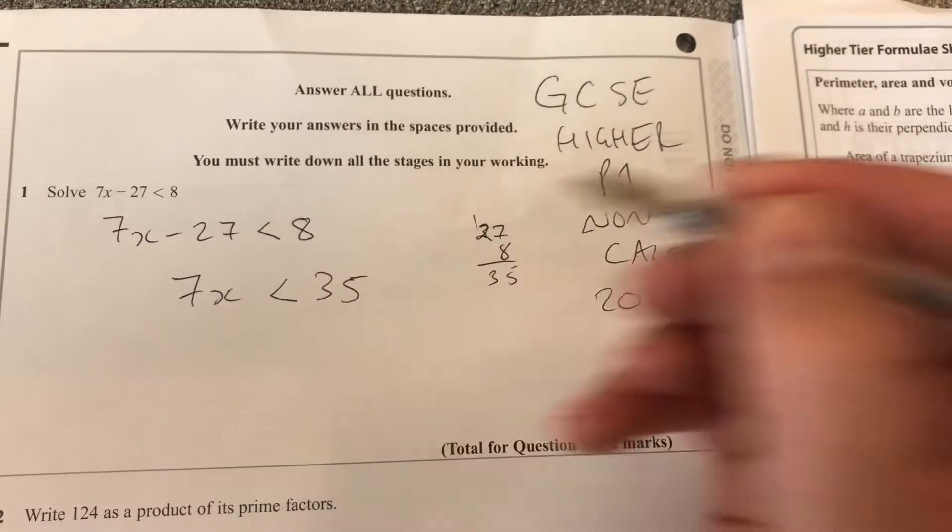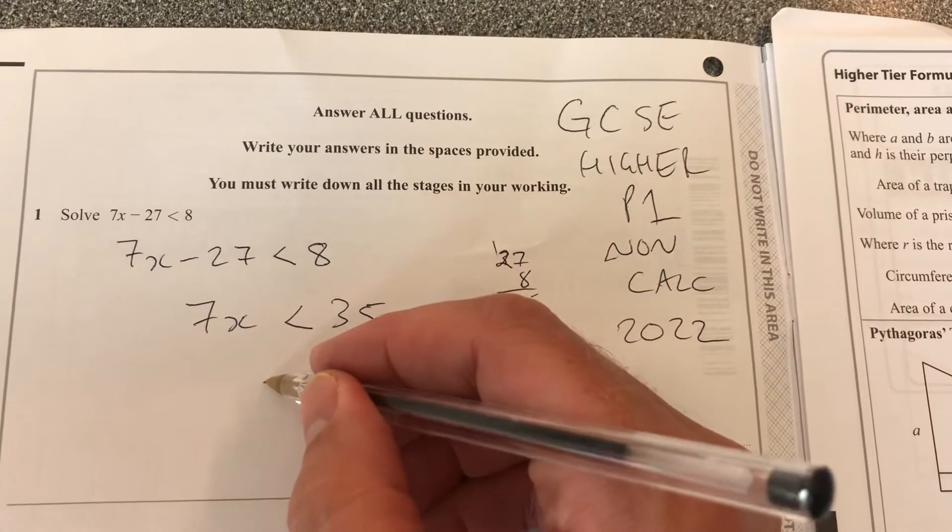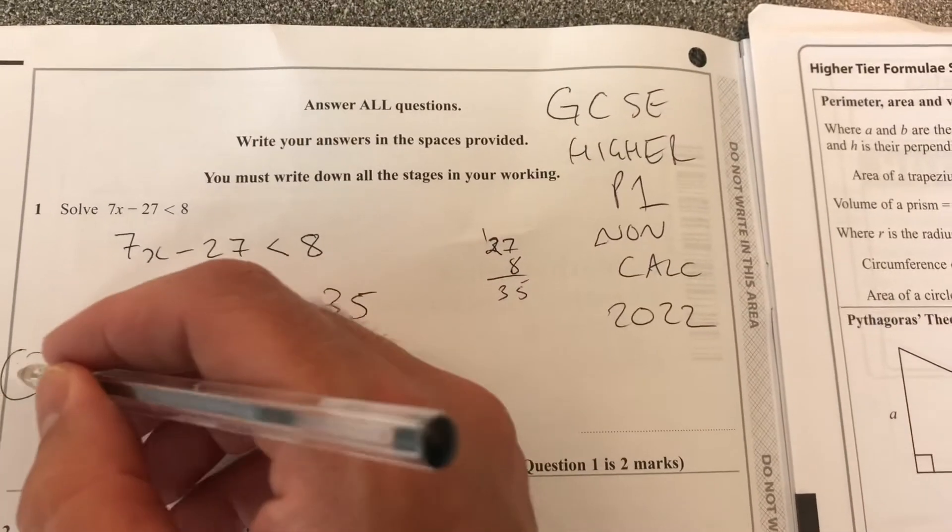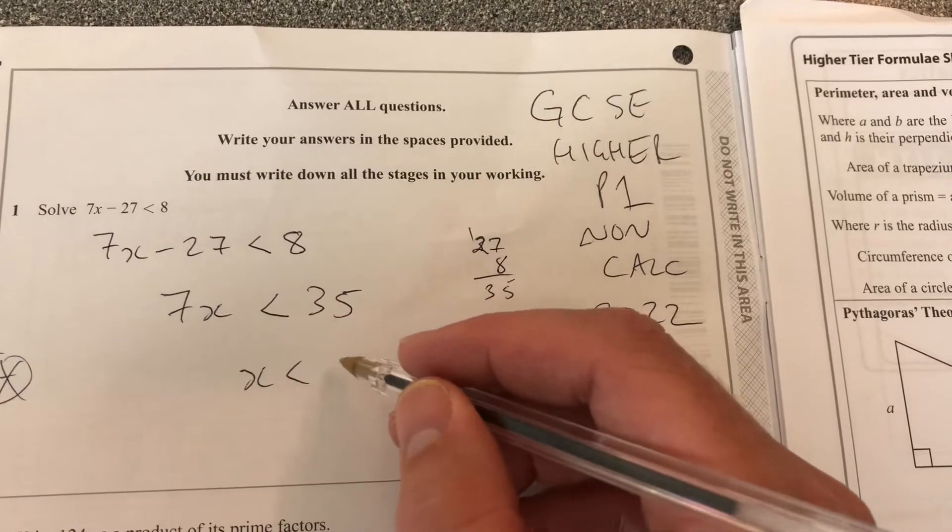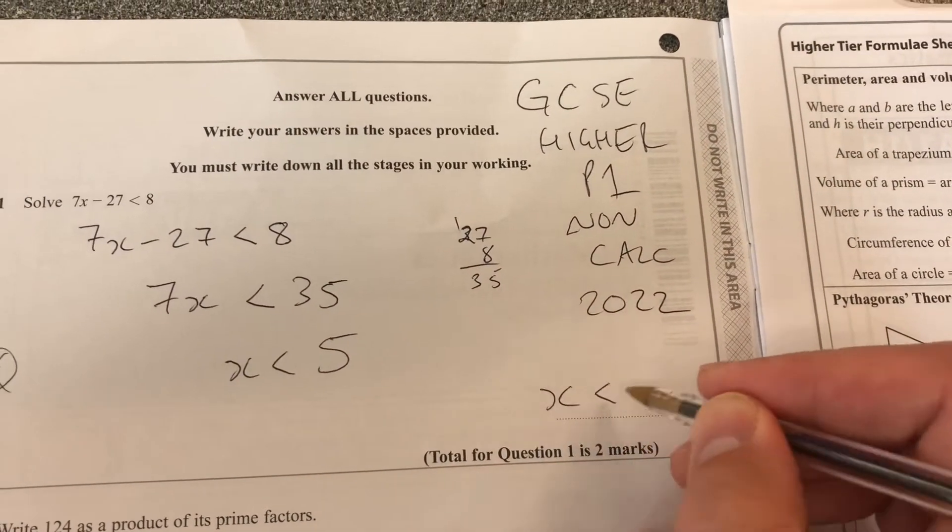It's going to be 35. And now I'm going to divide through by 7. I'm not doing anything with a negative, so I don't change that sign. 35 divided by 7 is 5. So my answer is x less than 5.